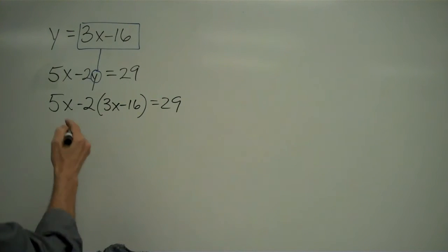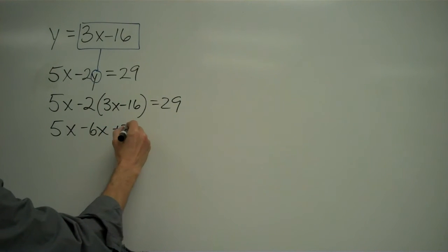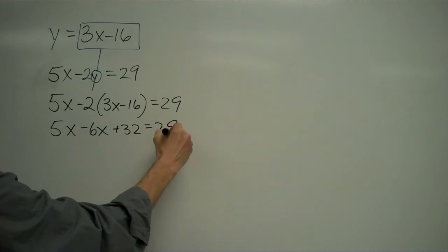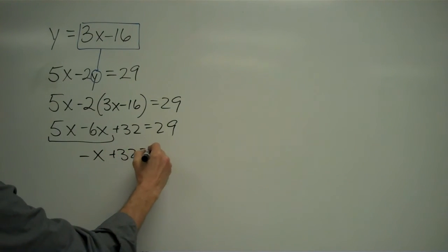So now I'll just distribute this negative 2 here: 5x minus 6x plus 32 equals 29. Combine my like terms: negative x plus 32 equals 29.